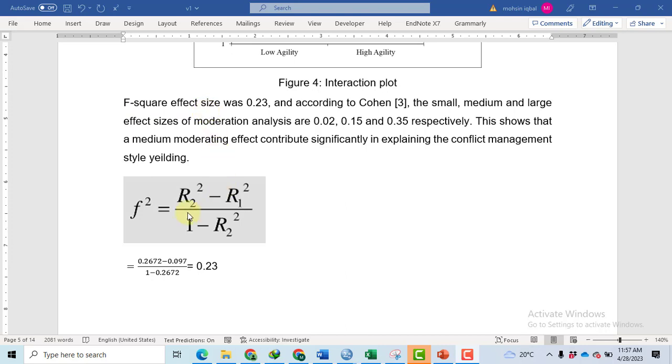Here is the formula: R² square is the variance explained by the independent variable, moderator, and their interaction, whereas R¹ square is the variance explained by only the independent variable. You can calculate R¹ square by using linear regression, and R² square can be obtained from the moderation analysis results.